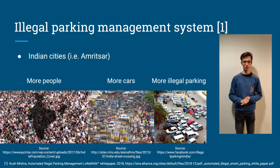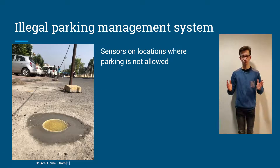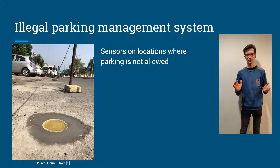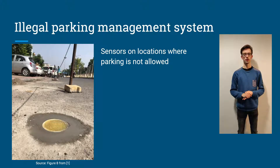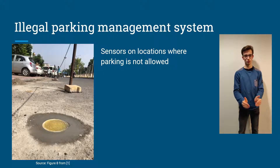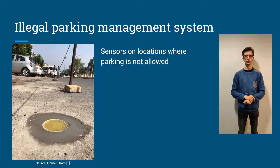So the illegal parking problem in these cities is growing, as you can see on the slide. To solve this big problem in Amritsar, a system was developed to sense illegally parked cars. This is done by placing a sensor in every spot where it is not allowed to park, as you can see on the slide.